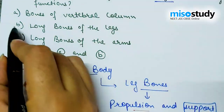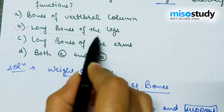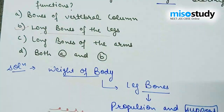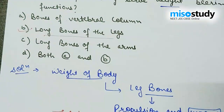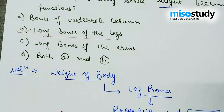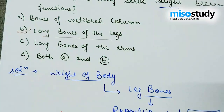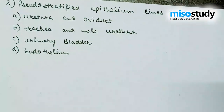So the right answer for question one is option B — long bones of the legs — because femur is articulated on the pelvic girdle, and the pelvic girdle movement is balanced at the hip joint. That is why they provide support to the body by lifting its weight. Let's move to the next question.